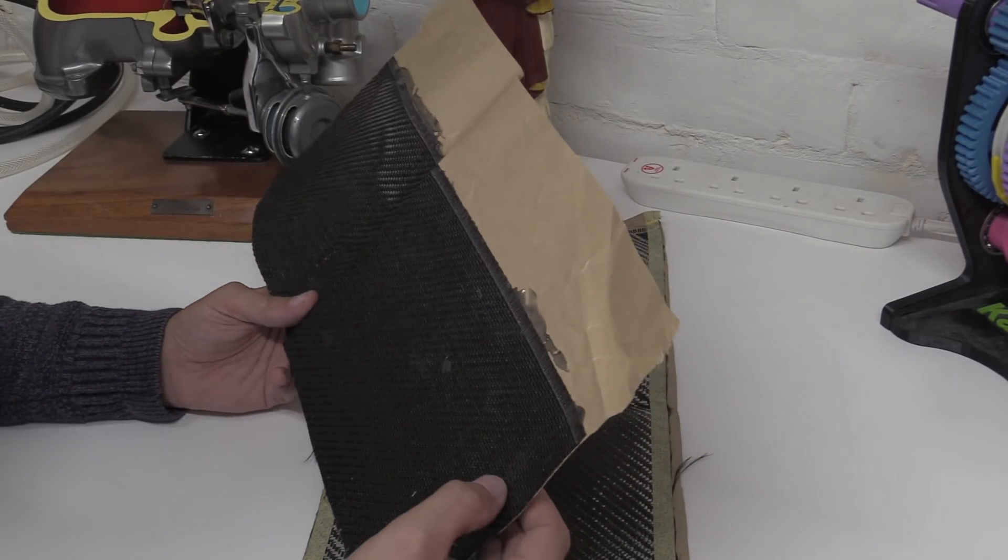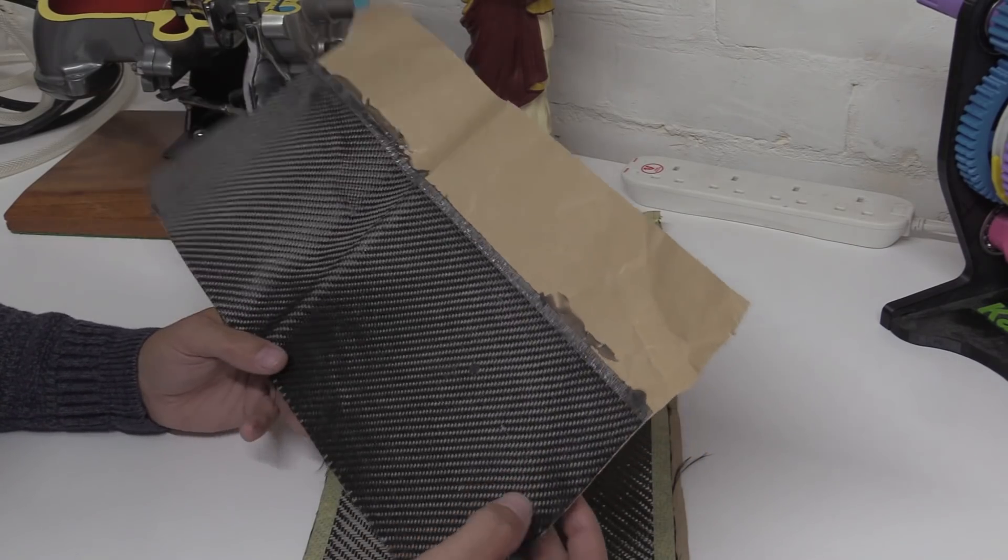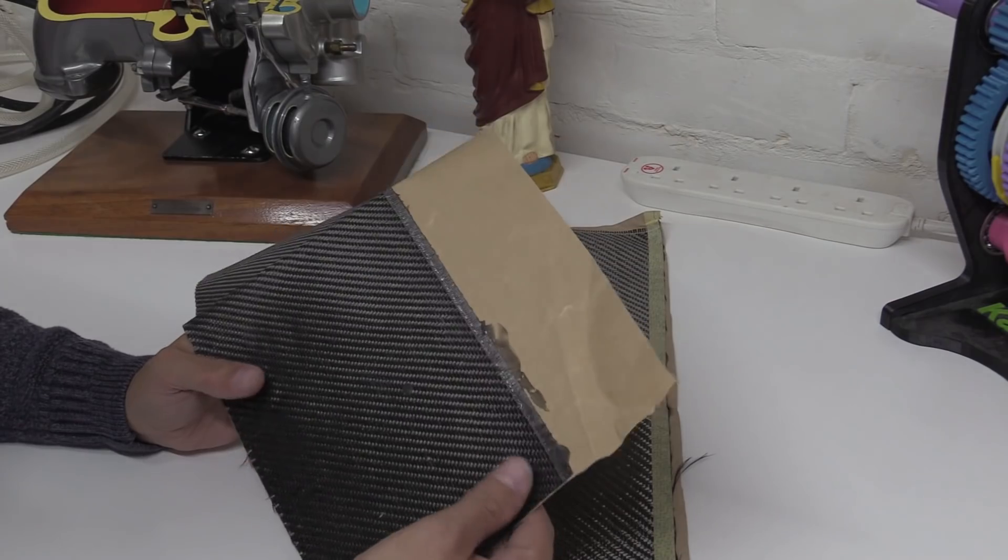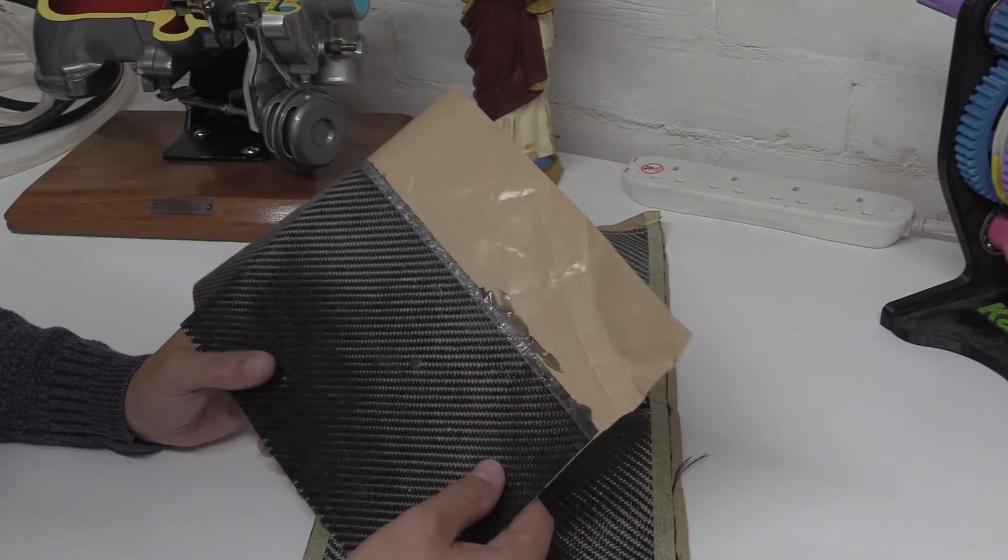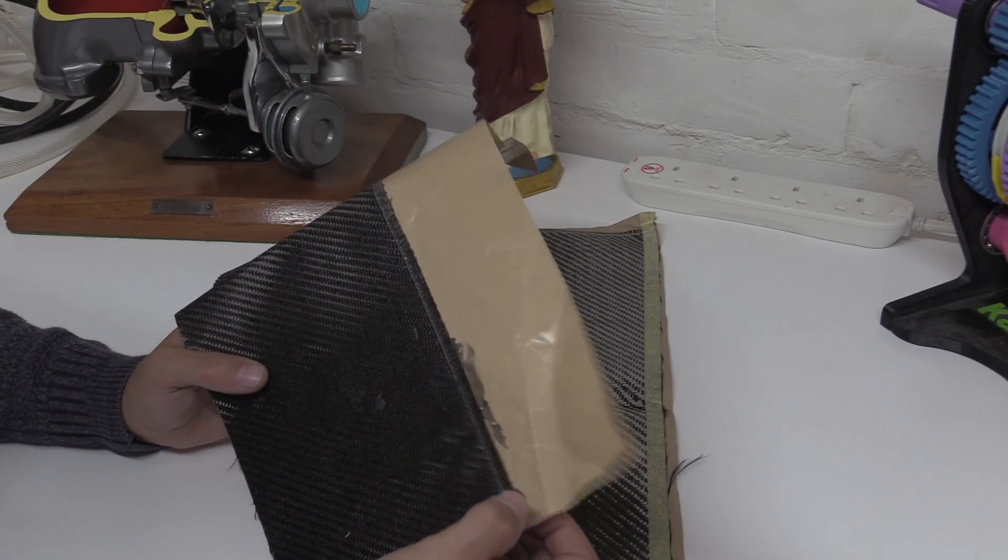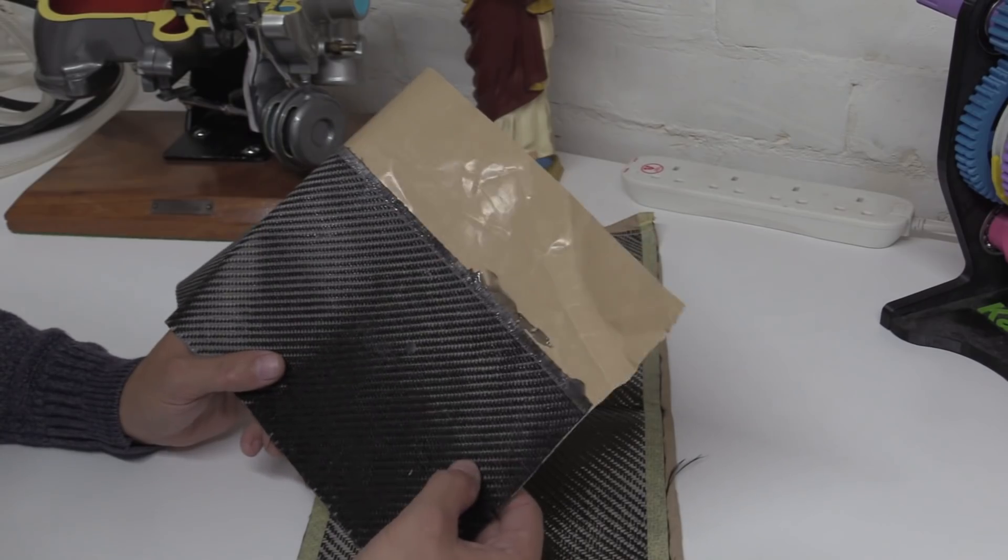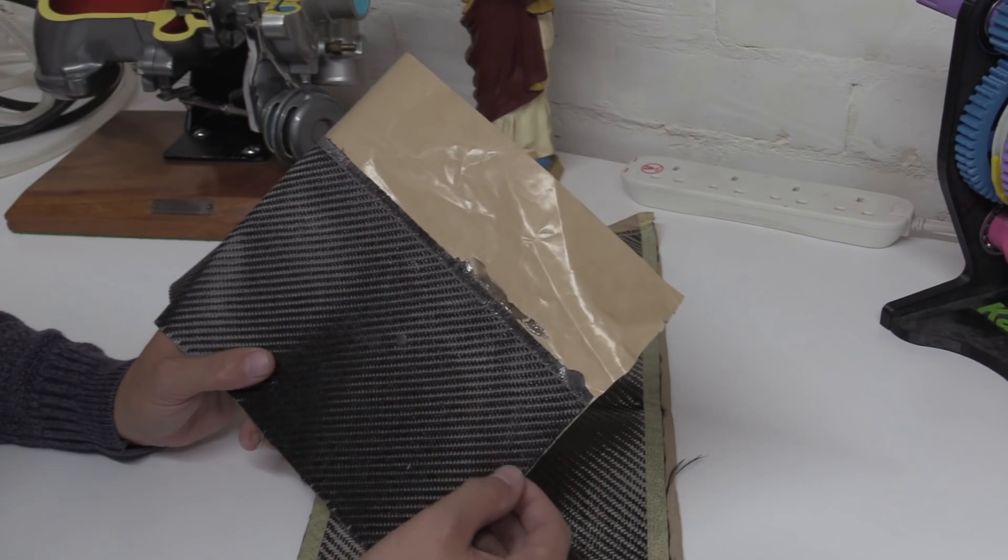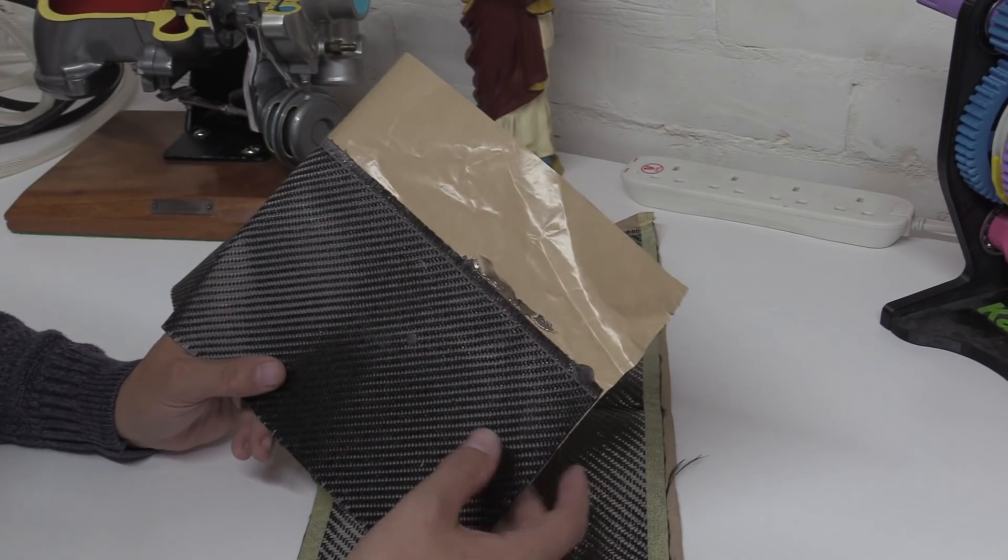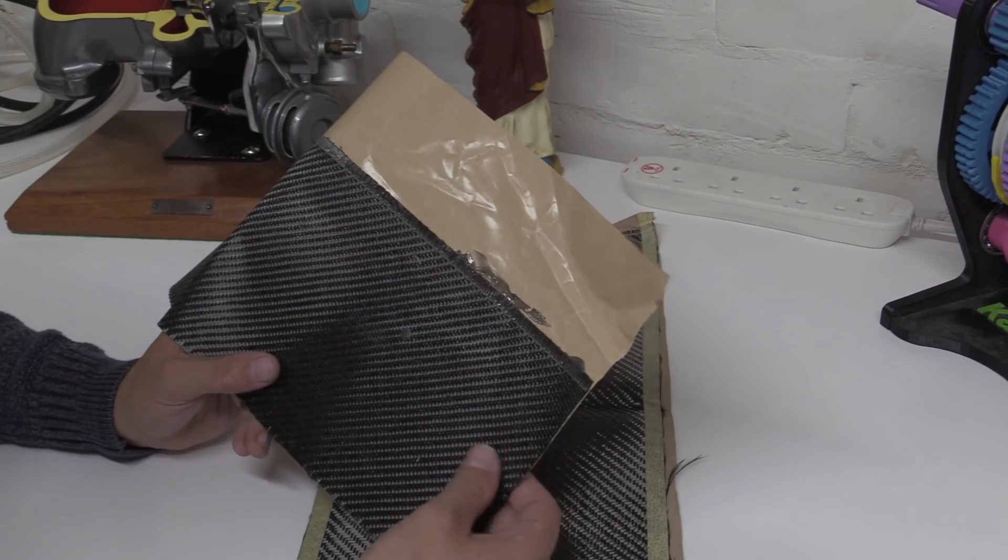The whole purpose of pre-preg is that this is pretty much done. You've got to keep this quite cool to stop the resin going off, but you basically heat it up and the resin will go. The reason why pre-preg is brilliant is because you've got the perfect amount. It's pre-impregnated, that's where pre-preg comes from. You've got the perfect amount of resin.